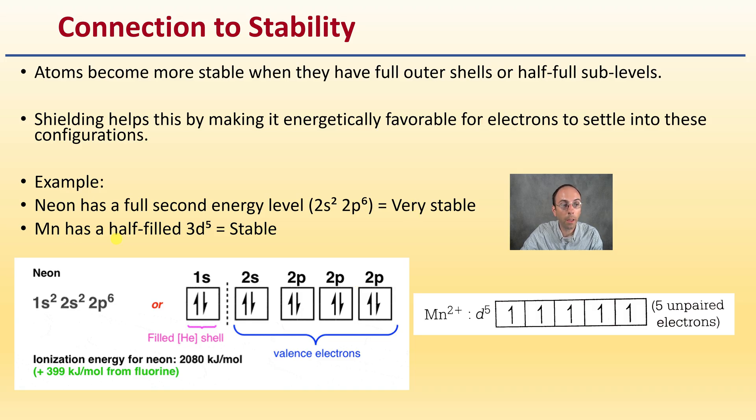Manganese has a half-filled 3d⁵, which is also very stable. Here we see they're unpaired, but each one has at least one electron in it, increasing that stability. We can see it's got a +2 charge, which is why it takes on that positive cation charge, because it increases the stability.